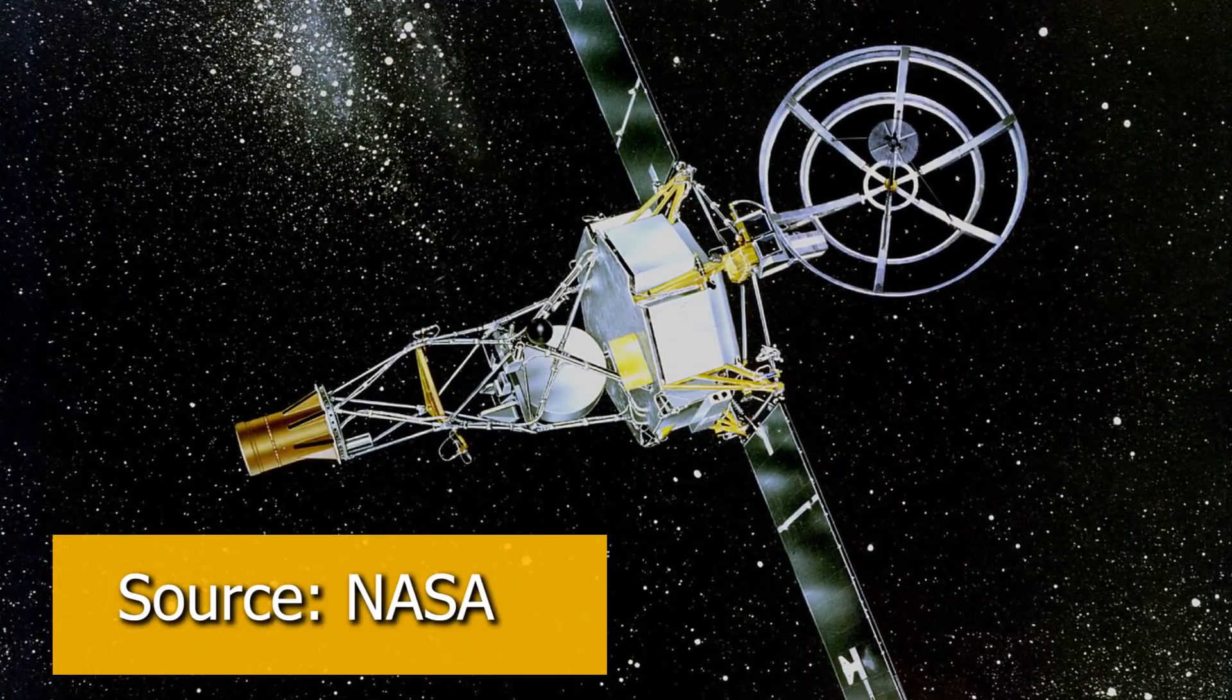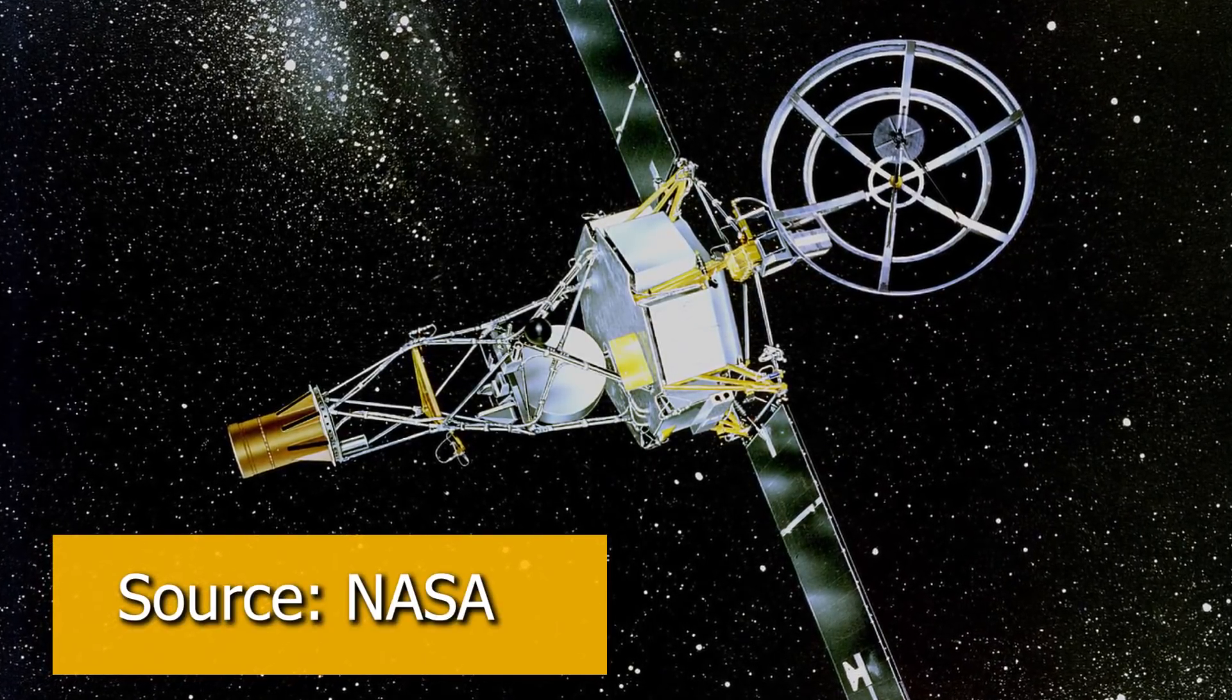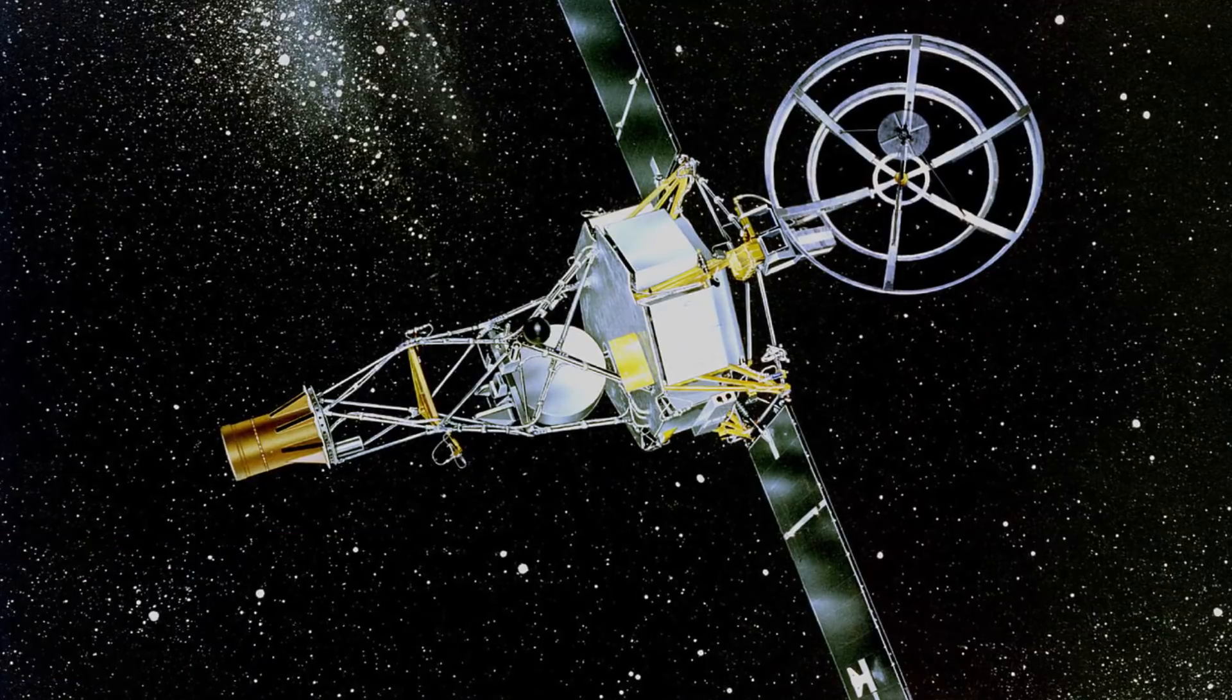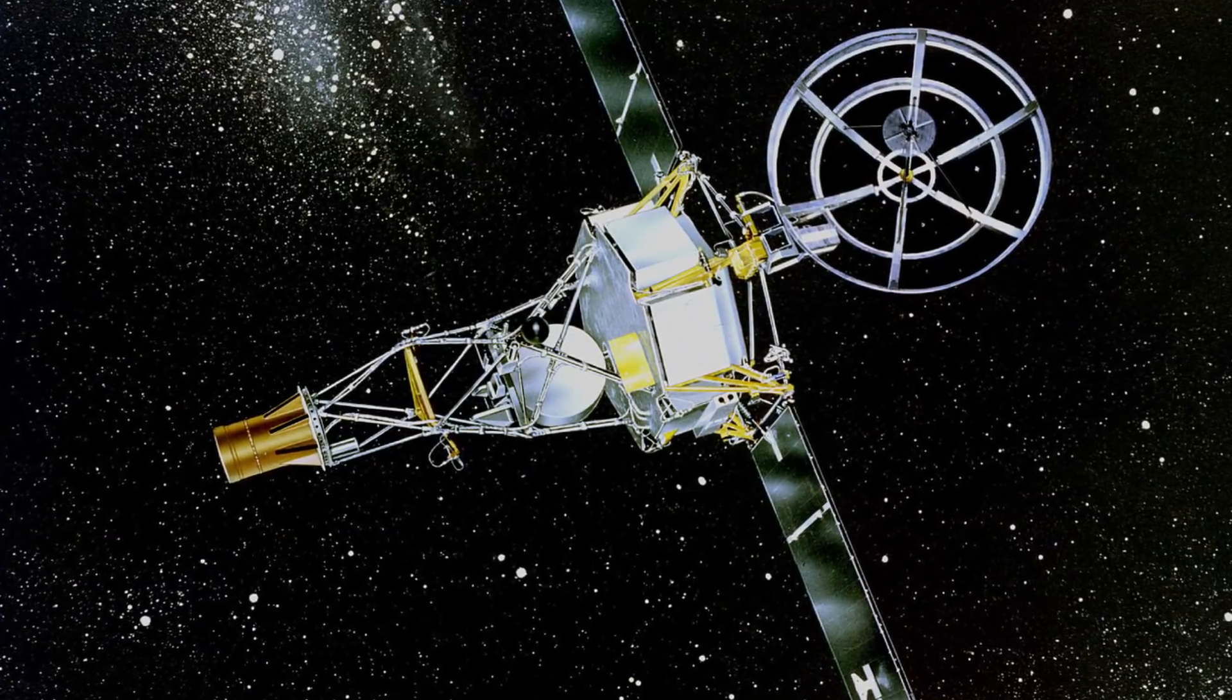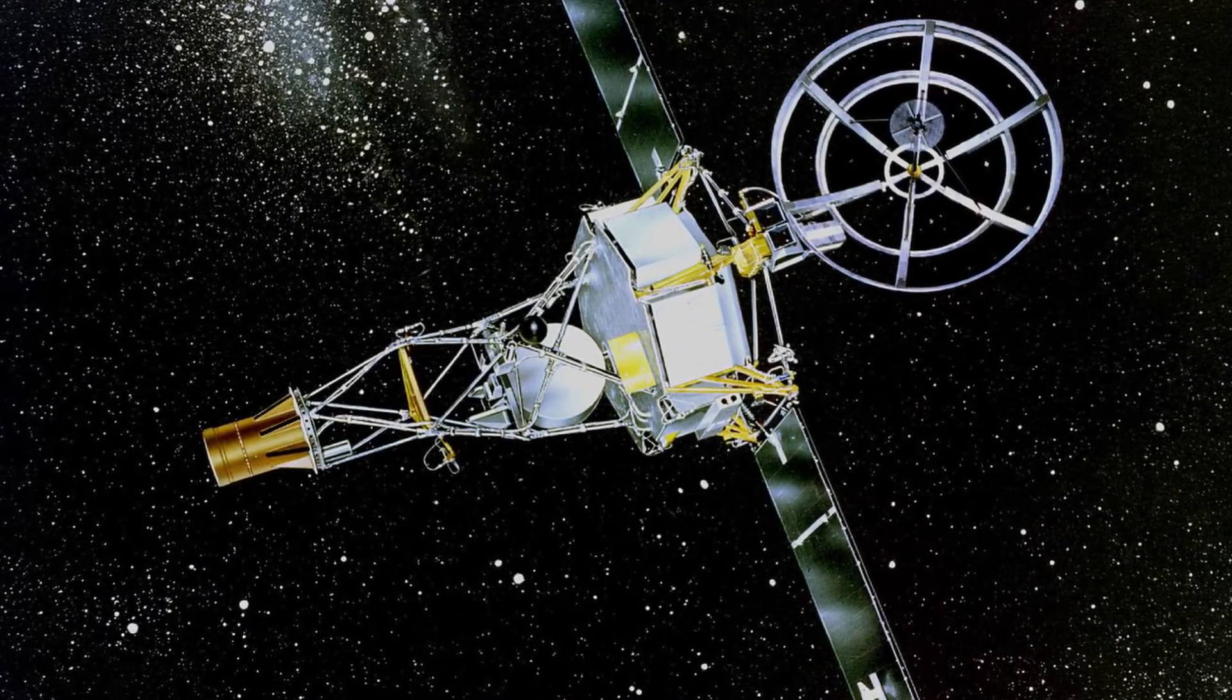So, people were really skeptical about the spacecraft design for Ranger was actually functional. However, there was a little bit more hope, because the Mariner program ended up using the Ranger design as their baseline, and Mariner 2 was a successful flyby of Venus. So, there was hope that it could work for Ranger 5.